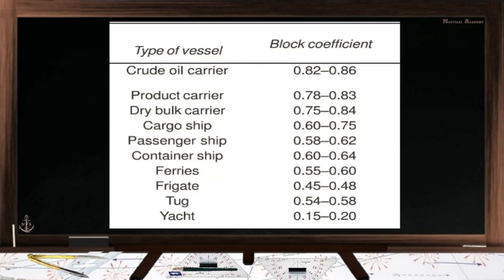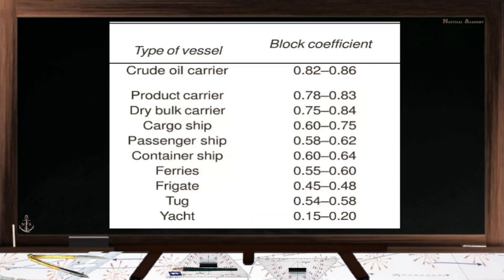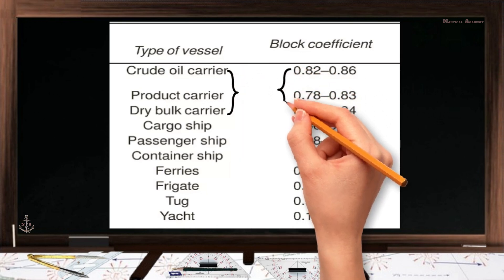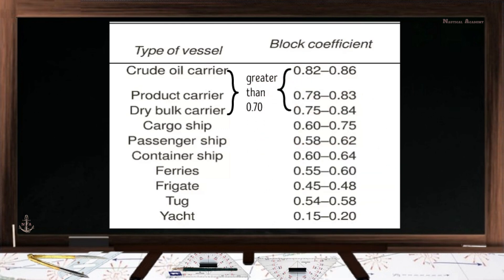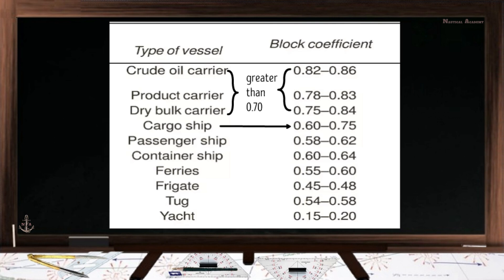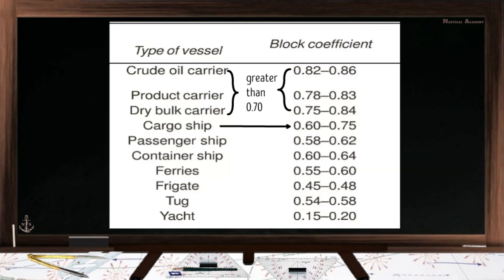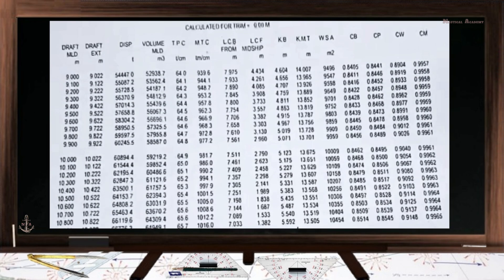Here are some typical values of a ship's block coefficient depending on the type of vessel. For crude oil, product, and dry bulk carriers, the block coefficient is usually greater than 0.70. For general cargo ships, the block coefficient may be less than or greater than 0.70 depending on the ship's existing draft. These values serve only as a reference; for the exact value, refer to the ship's stability manual provided by the shipbuilder.